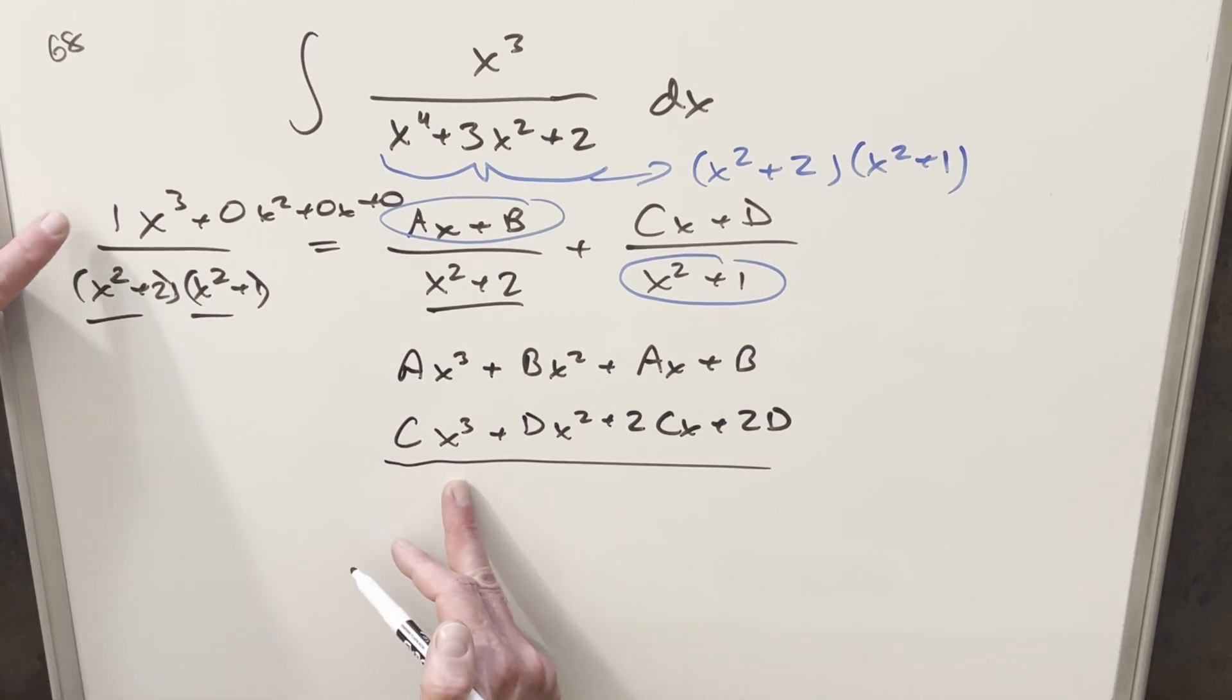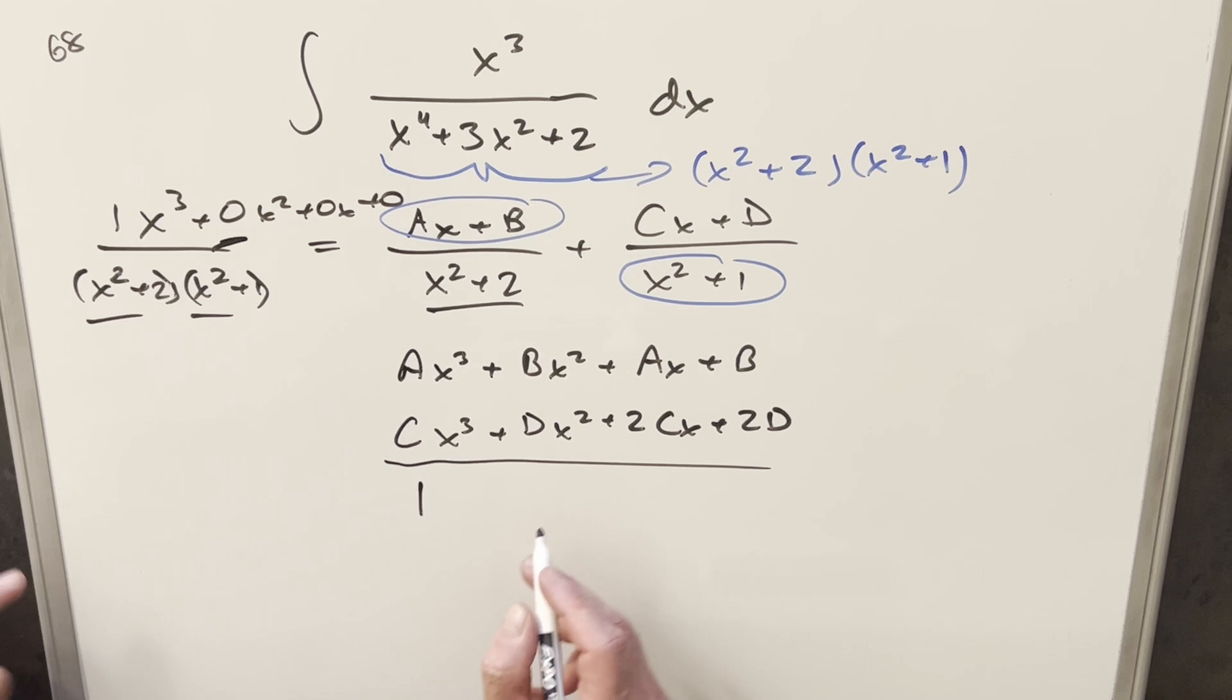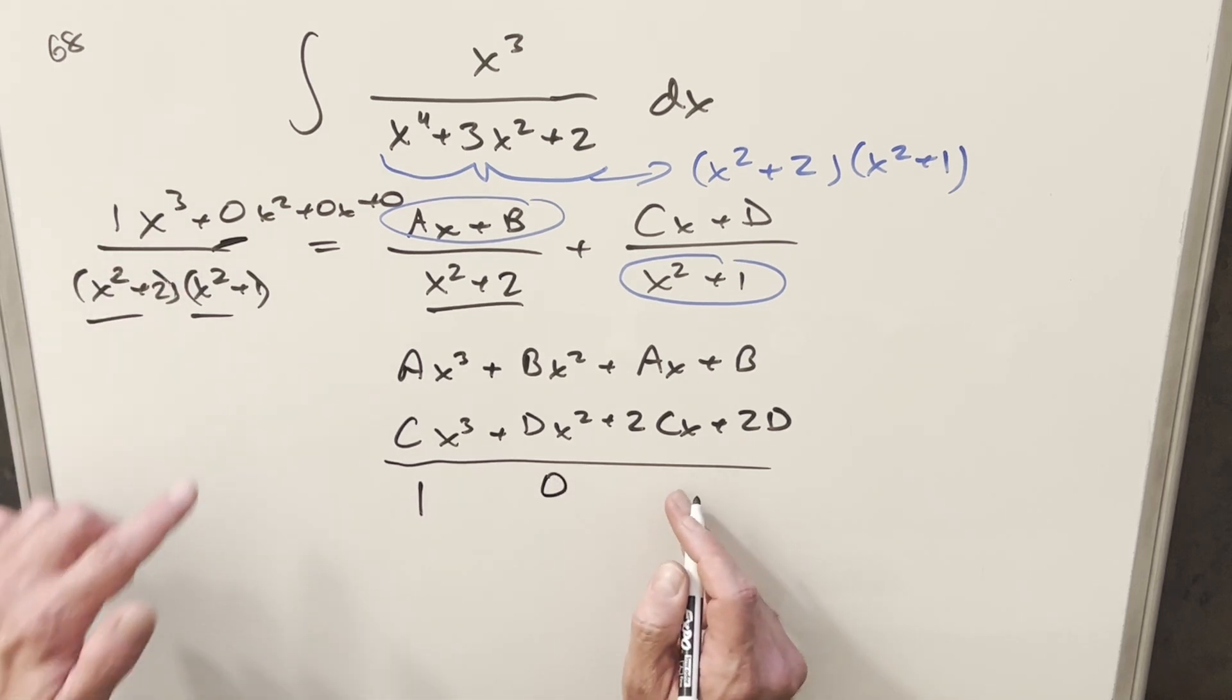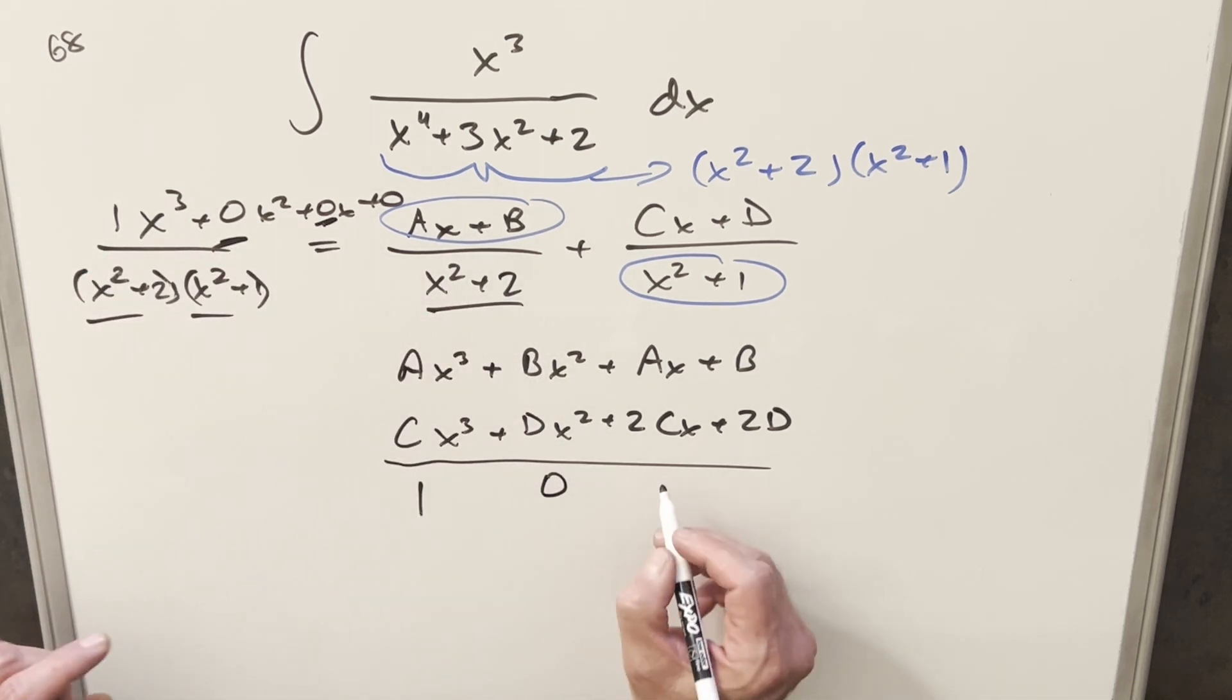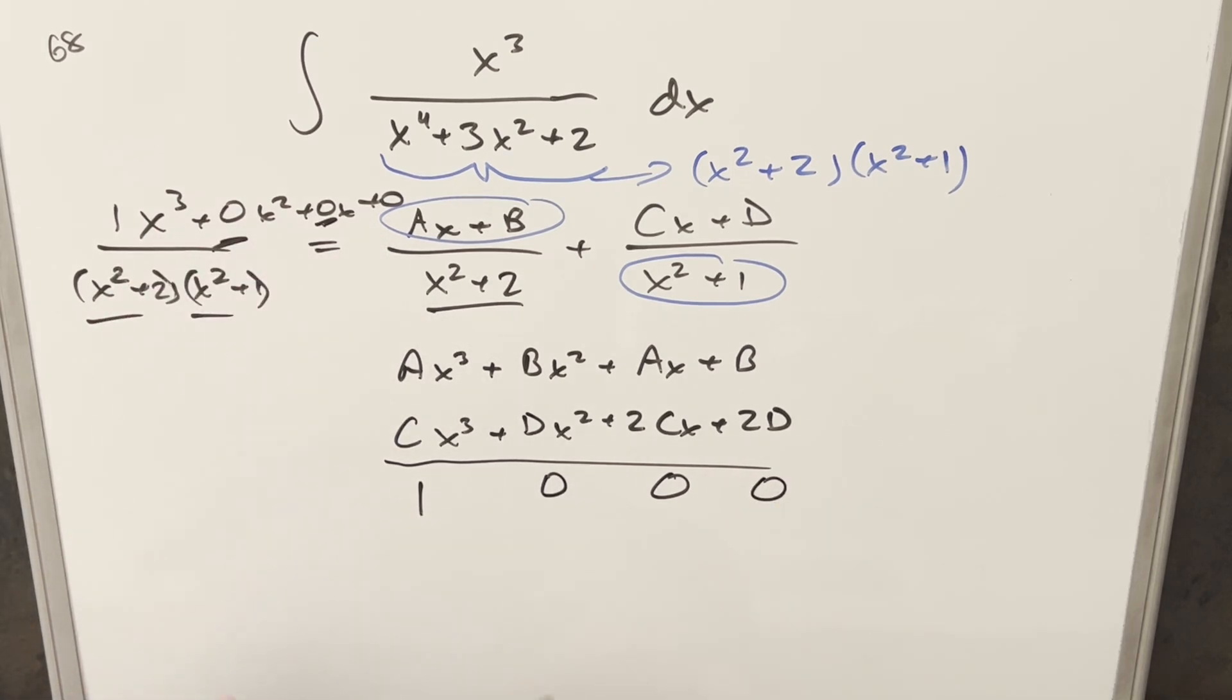So for our x cubed, we want this to be equal to 1 here. For our x squared terms, we want that to be equal to 0. We're going to have 0x squared terms. For our x terms, we're going to have 0. So this is going to be a 0 here. For our constant terms, d's need to be 0.